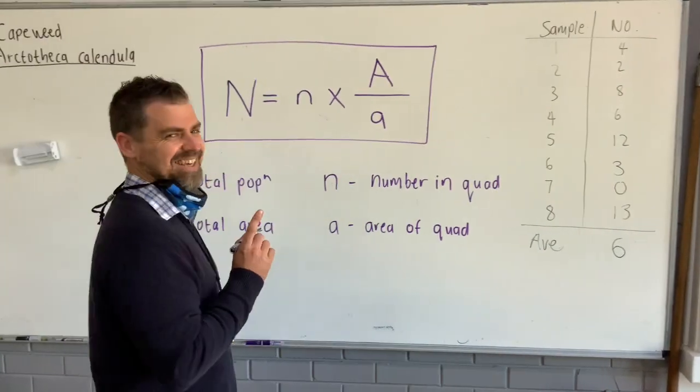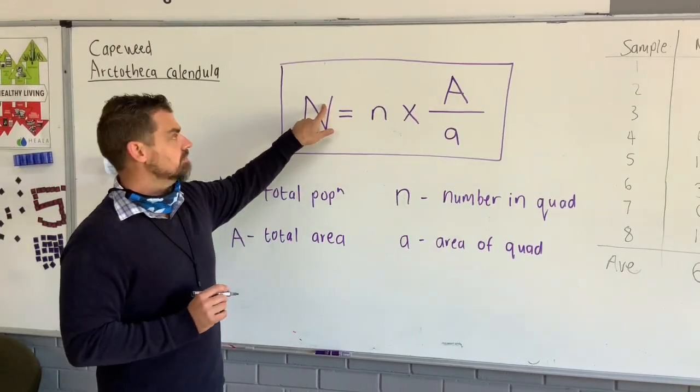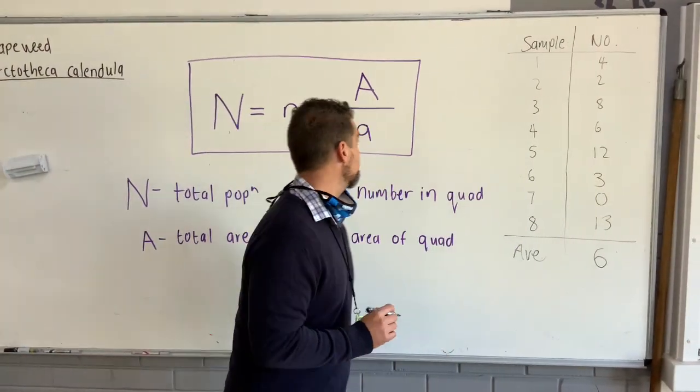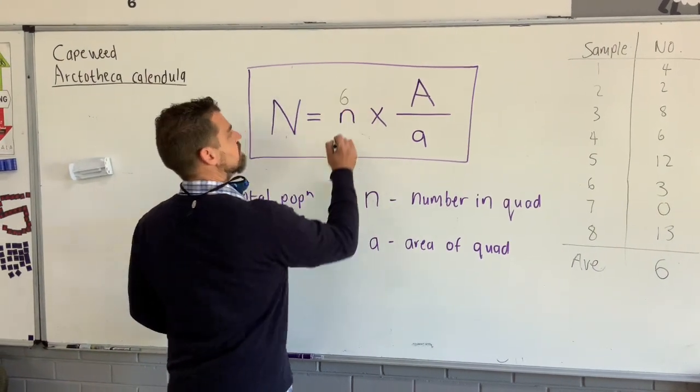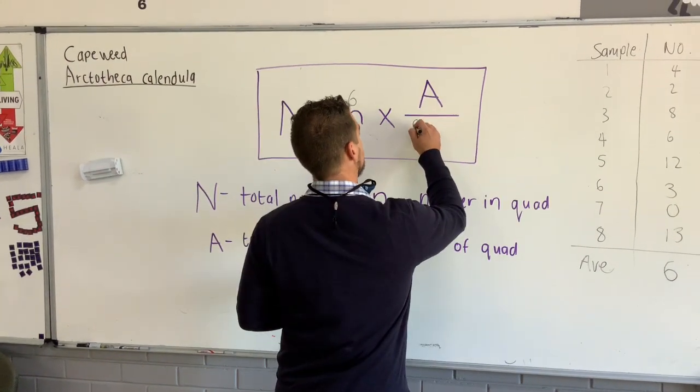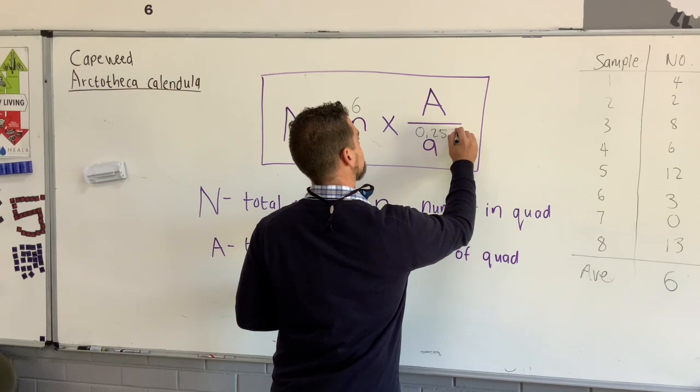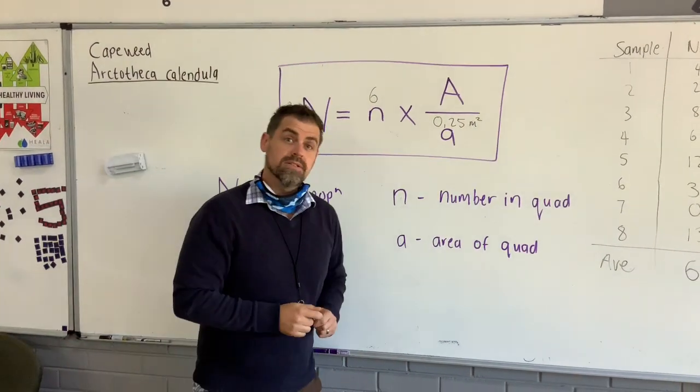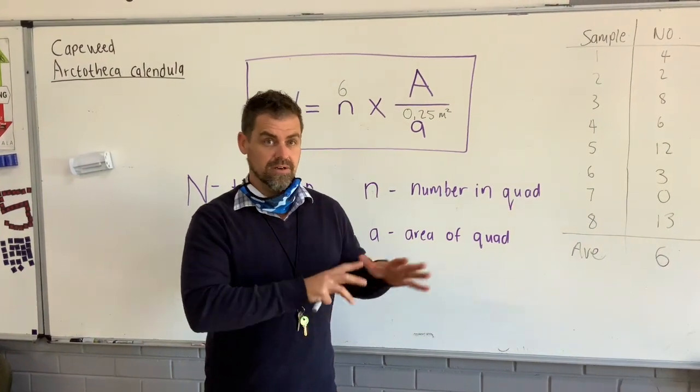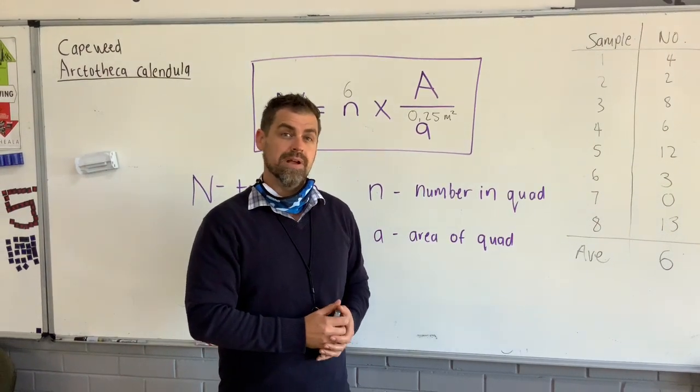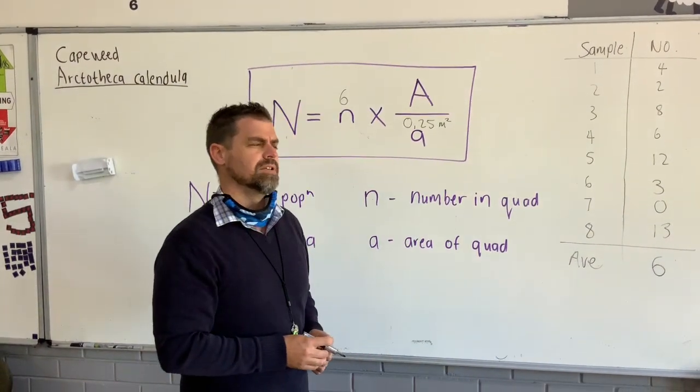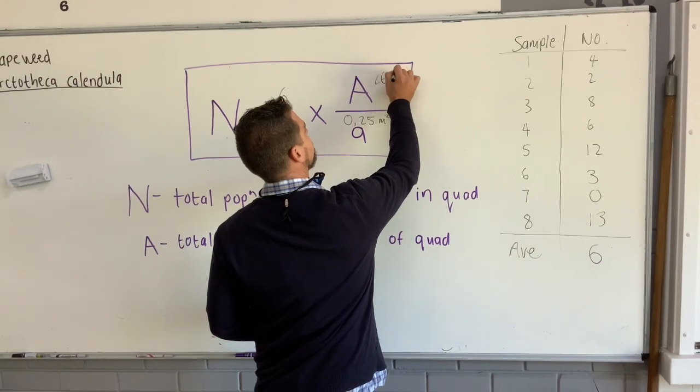So, we don't know the total number. We do know the number in each quad. At the moment, we have an average of 6. So, we can substitute it for 6 over there. We do know the area of the quad. That's 0.25 meters squared. And, thanks to some excellent measurements by Mr. Kent, we do know and we calculated the total area of the biodiversity garden field, where we're counting these cape weeds, is 265 meters squared.